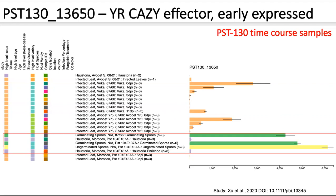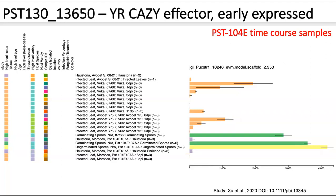Finally, these are a different accession — germinating and germinated spores. It's highly expressed, which is to be expected, as these are what cause the initial infection. And haustoria show low expression, which you'd also expect, as these are formed later in the infection process. Here we have the same gene but in the other reference transcriptome. Some of the values and error bars are slightly different, but the pattern is mostly the same. You can utilise whichever reference you prefer.